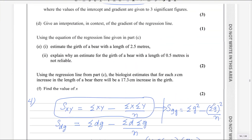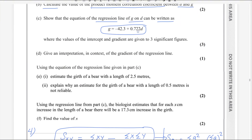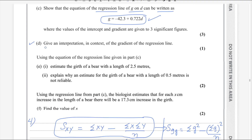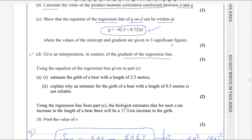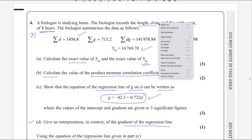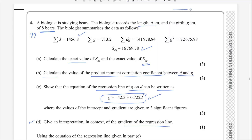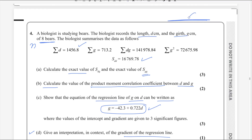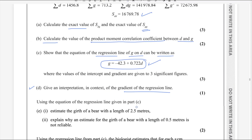We needed to prove that the regression line equals minus 42.3 plus 0.722d, and we got that. For the next part D, give an interpretation in context of the gradient of the regression line. In the regression line, b is the gradient. D is the length of the bear and g is the girth — girth is like the circumference. So g, the girth, is increasing by 0.722 centimeters for every one centimeter increase in length. So this b is the gradient.